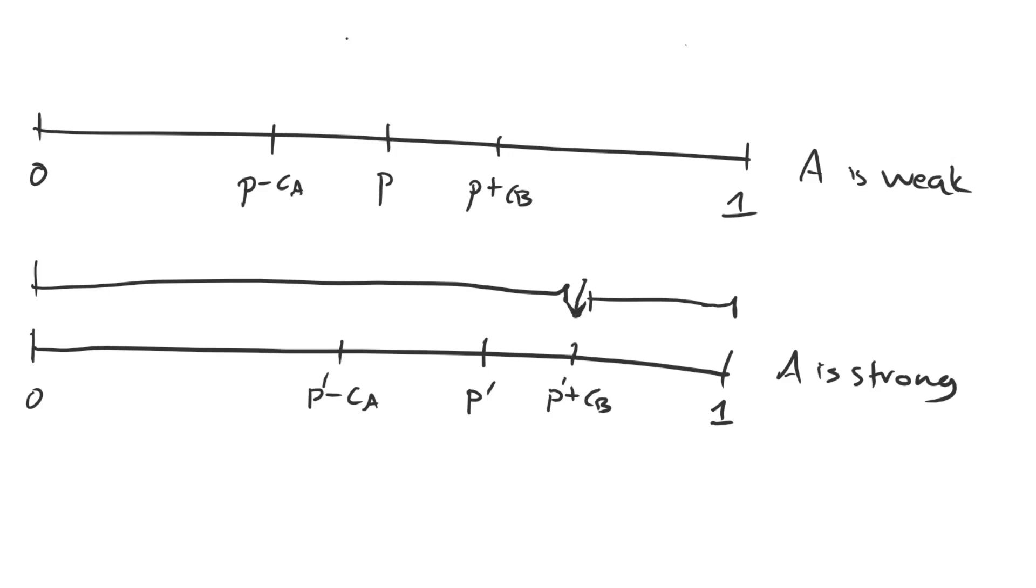But once more, if A is actually weak, if B privately knows that it's strong and has lots of tanks and A is relatively weak, then because a demand will only get B this amount, whereas rejecting and fighting a war will give B that extra amount, B might reject that demand.